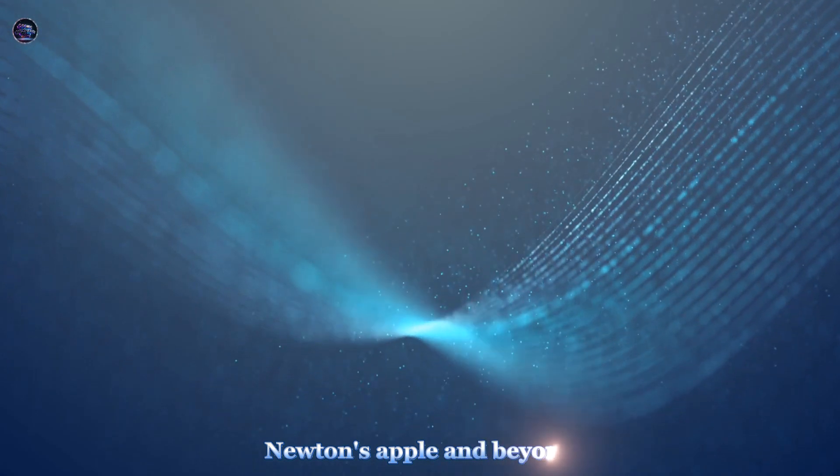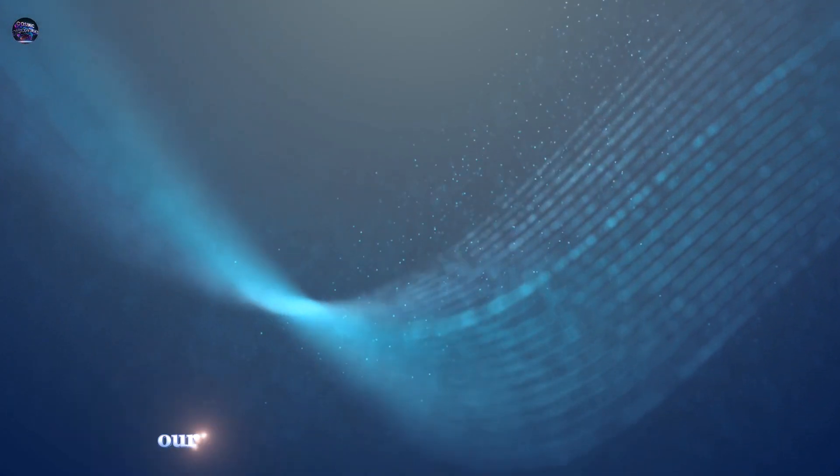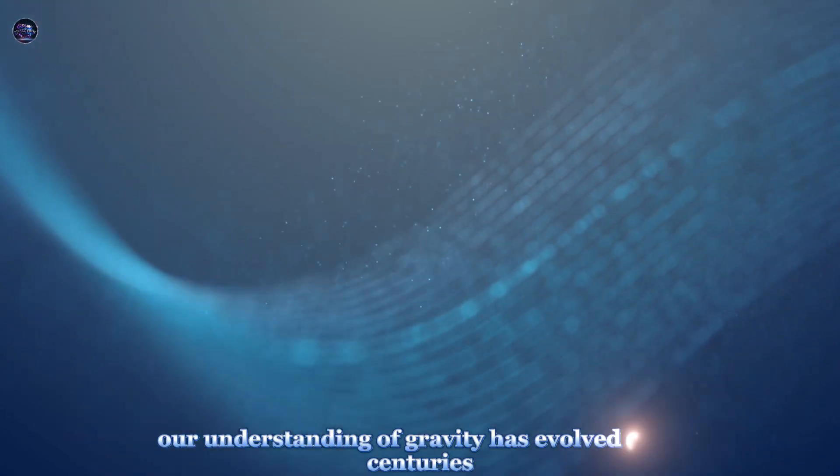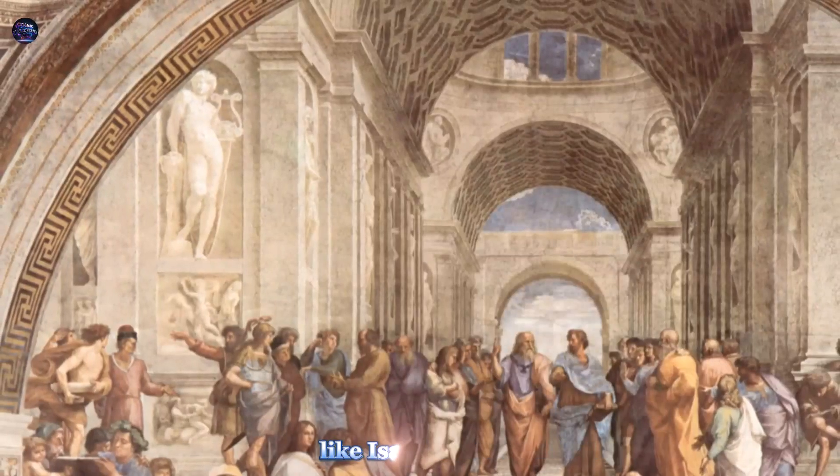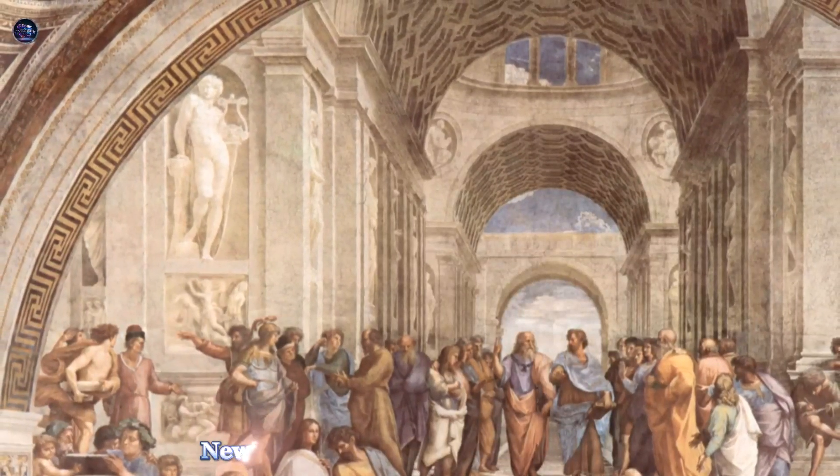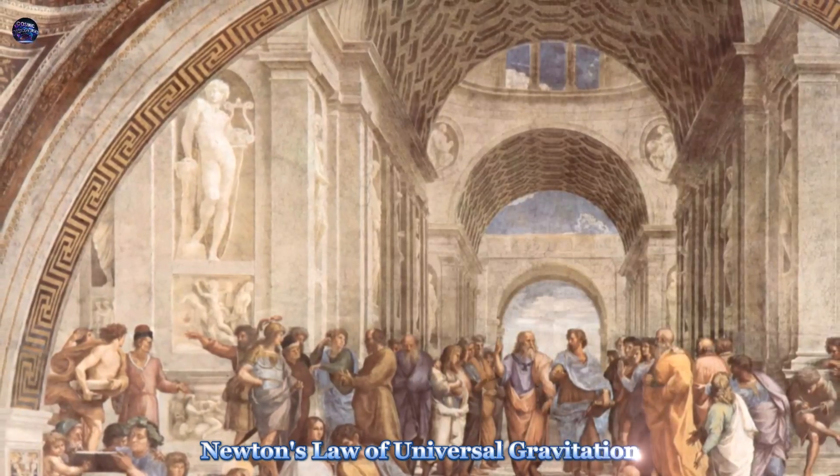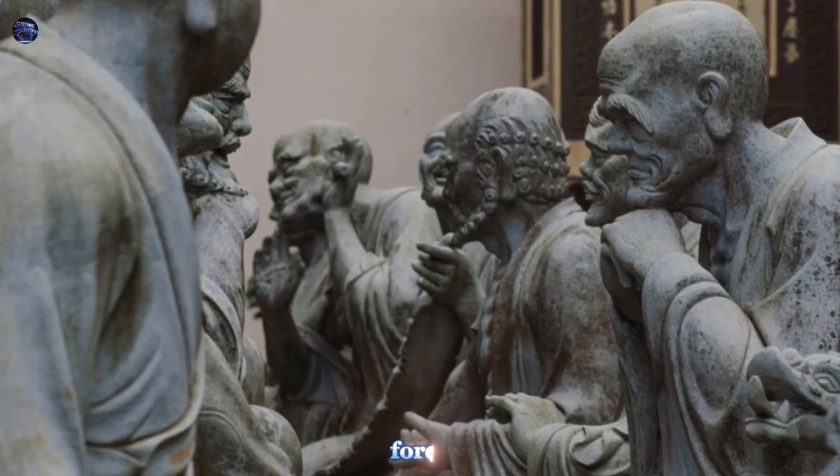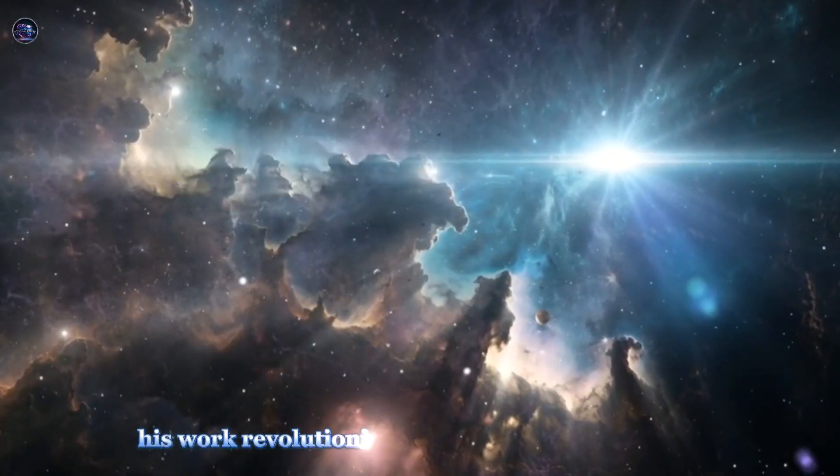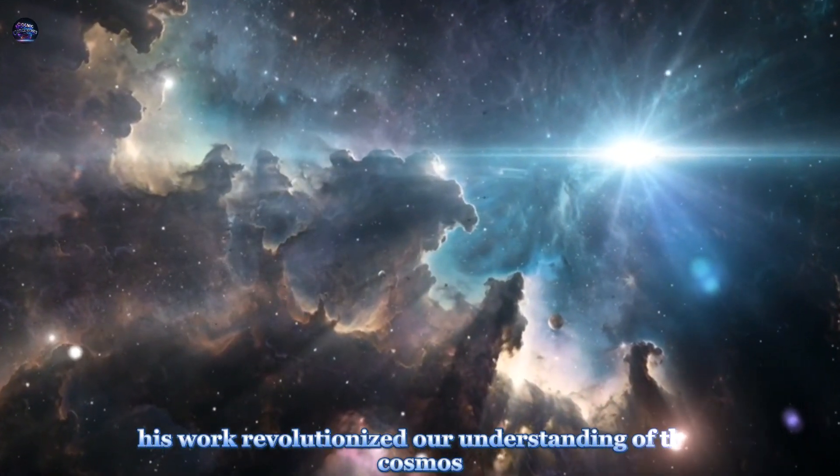Newton's Apple and Beyond. Our understanding of gravity has evolved over centuries, from ancient philosophers to brilliant minds like Isaac Newton. Newton's Law of Universal Gravitation, published in 1687, provided a mathematical framework to describe this force. His work revolutionized our understanding of the cosmos.